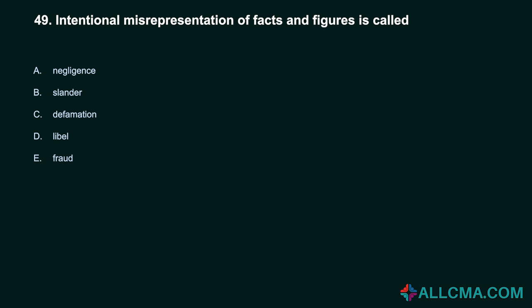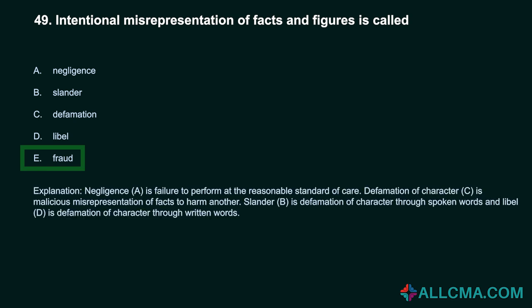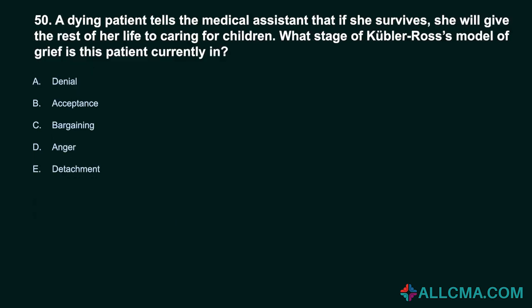Question 49: Intentional misrepresentation of facts and figures is called: A. Negligence. B. Slander. C. Defamation. D. Libel. E. Fraud. Correct answer: E. Fraud. Negligence is failure to perform at the reasonable standard of care. Defamation of character is malicious misrepresentation of facts to harm another. Slander is defamation of character through spoken words. Libel is defamation of character through written words.